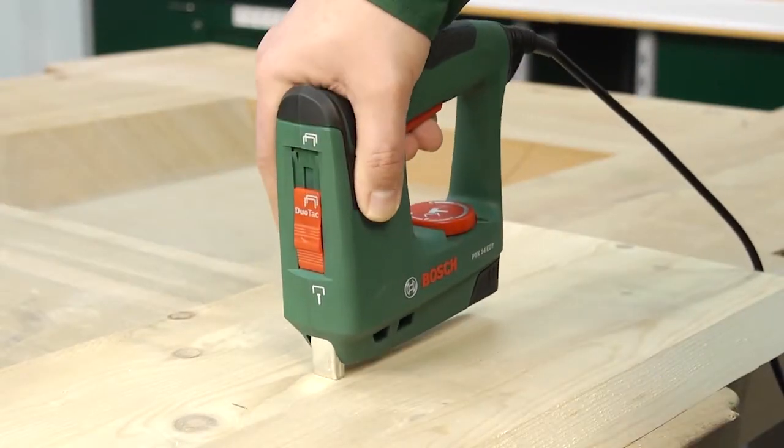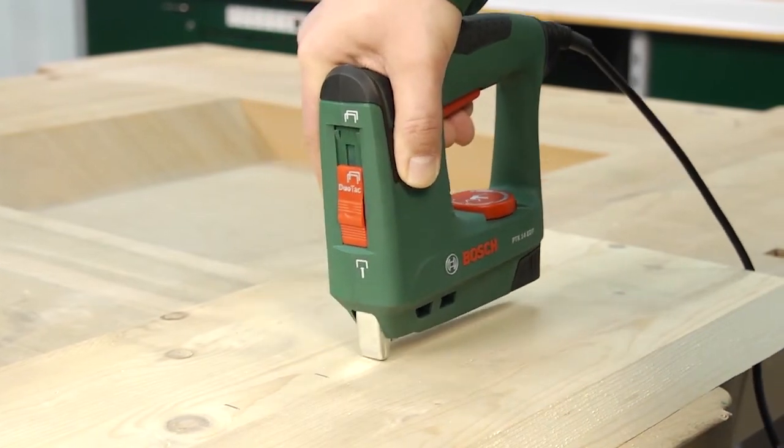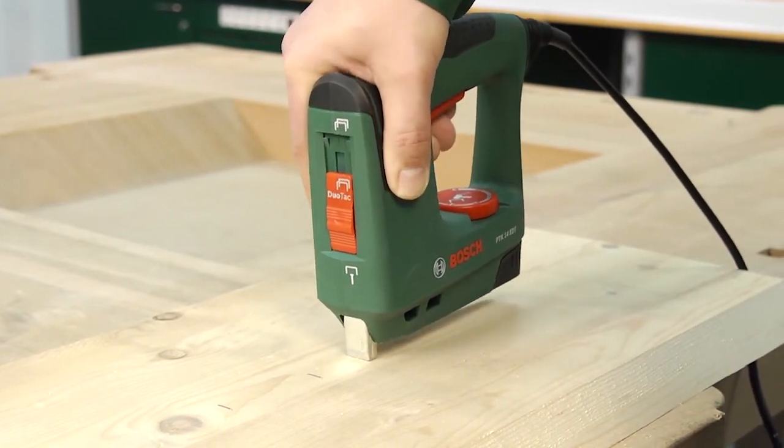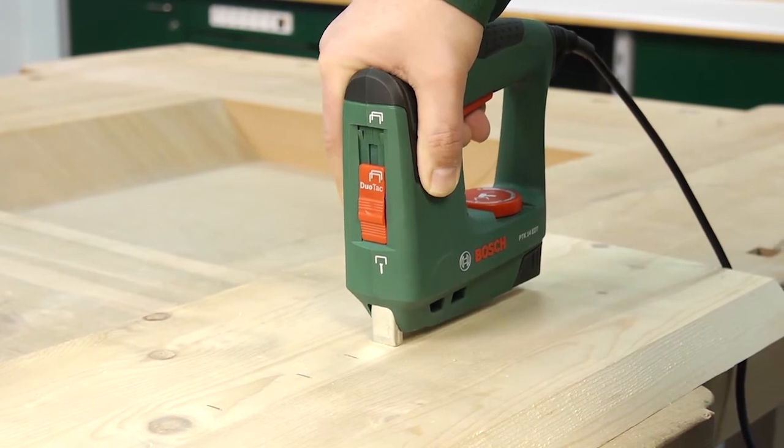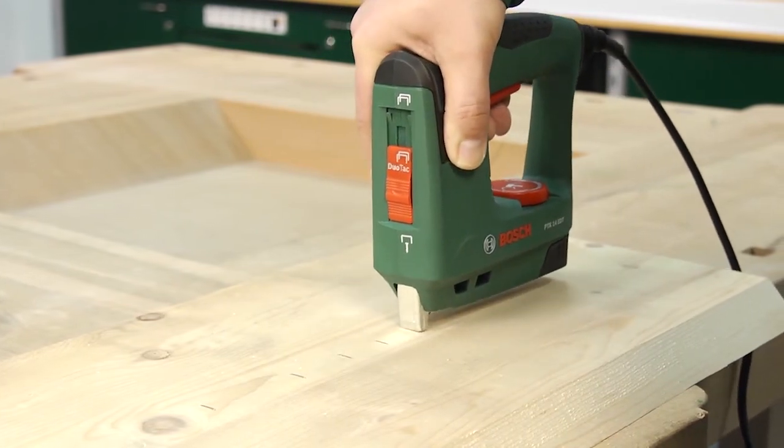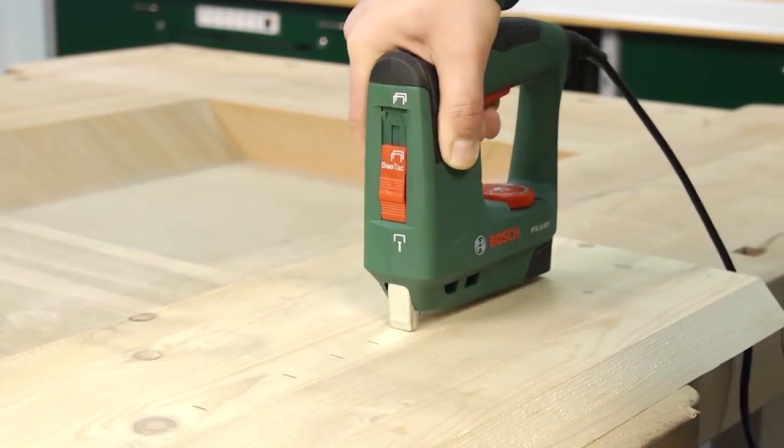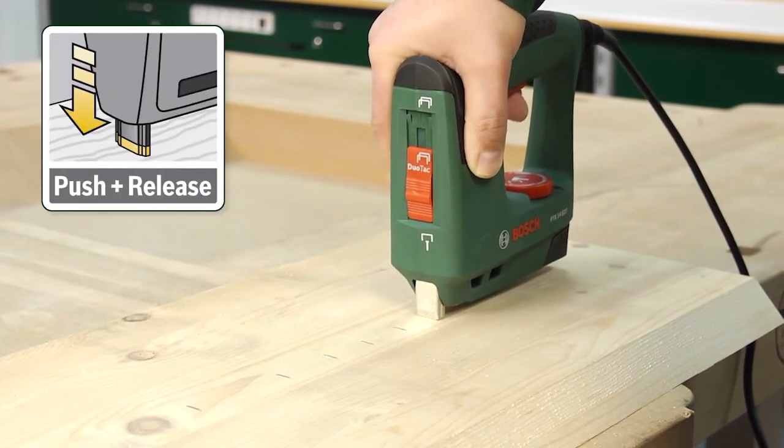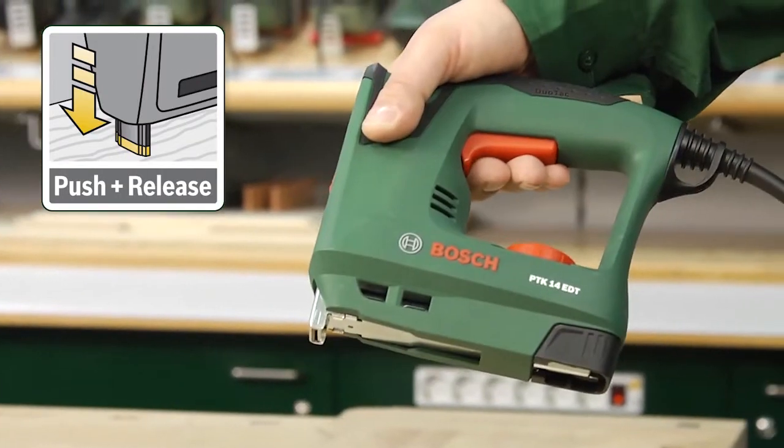To staple and fix objects, you simply place the PTK14EDT on the workpiece, pressing the tacker nose down by doing so, and then pressing the switch to trigger the impact. This two-stage push and release system prevents unintentional triggering.